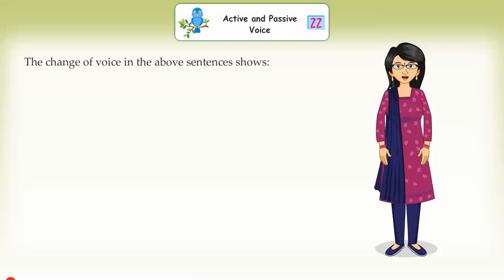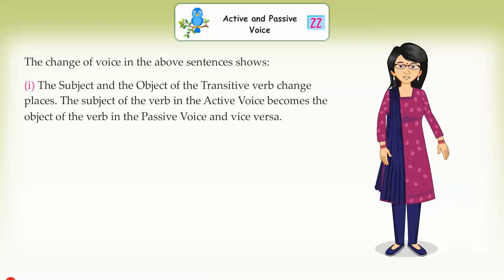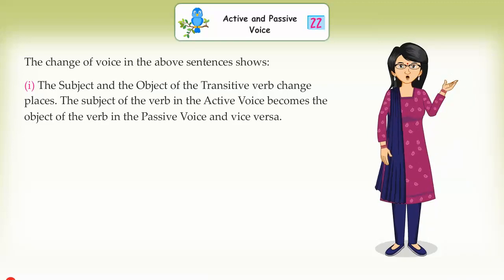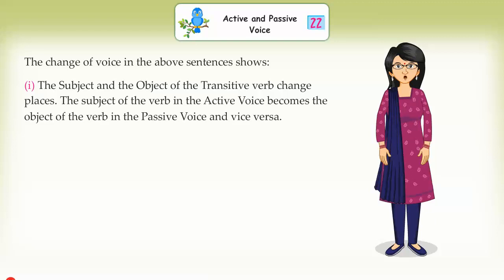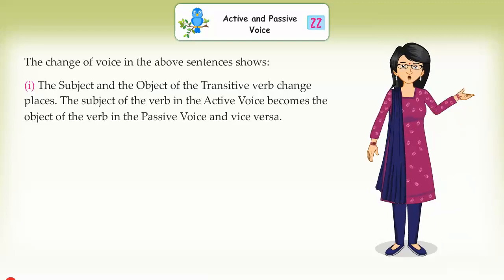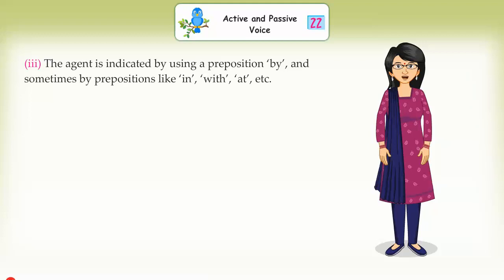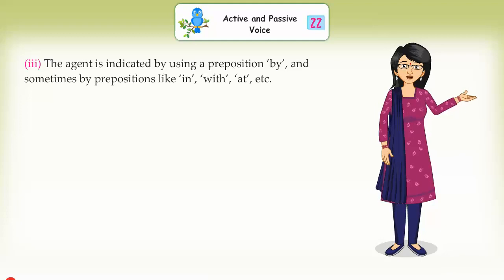The change of voice in the above sentences shows that the subject and the object of the transitive verb change places. The subject of the verb in the active voice becomes the object of the verb in the passive voice and vice versa. The verb is changed to passive form. A suitable form of the verb 'to be' — am, are, was, were, be, being, been — is used before the past participle (third form of verb) of the main verb. The agent is indicated by using the preposition 'by,' and sometimes by prepositions like 'in,' 'with,' 'at,' etc.